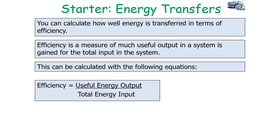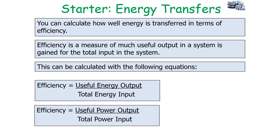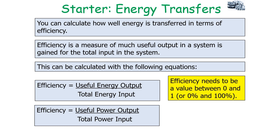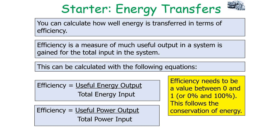We can calculate efficiency using the following equations: efficiency equals the useful energy output divided by the total energy input, or efficiency equals the useful power output divided by the total power input. Efficiency does not have any units — it is a numerical value or a percentage, and must be a value between 0 and 1, or 0% and 100%. This follows the conservation of energy, that energy cannot be created nor destroyed.